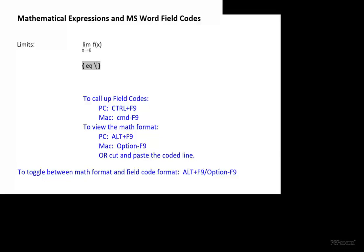We have a new field code to learn. The new field code is overstripe, so we type O after the backslash.